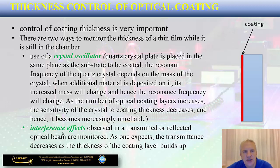There are two distinct ways to monitor coating thickness while the optical component is in the chamber. The first is the use of crystal oscillators — quartz crystal plates placed in the same plane as the substrate. As the coating is applied, mass increases, changing the resonant frequency of the oscillator. The second method uses interference effects observed through a transmitted or reflected optical beam, where transmittance changes as the coating builds up.